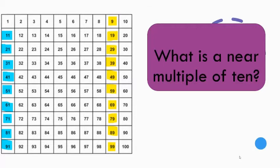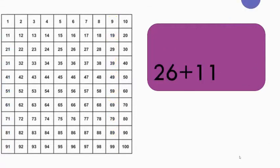Now we need to add the following two numbers: 26 plus 11. Now the near multiple of 10 in this sum is 11. The number 11 is close to 10, it is one more.